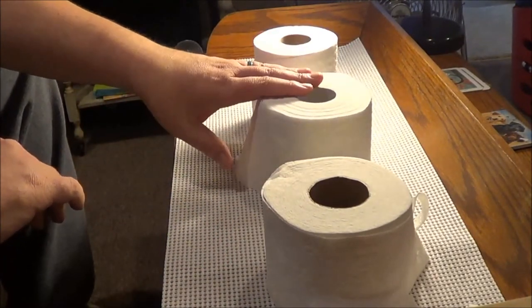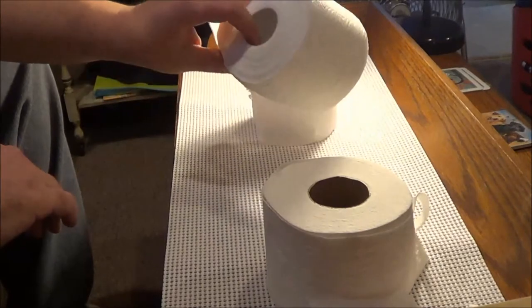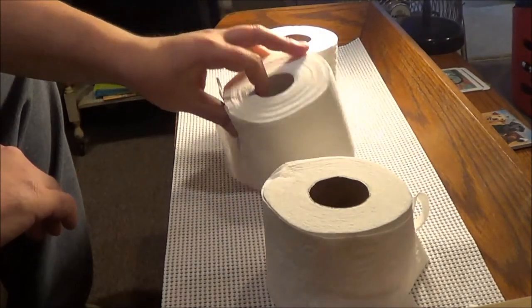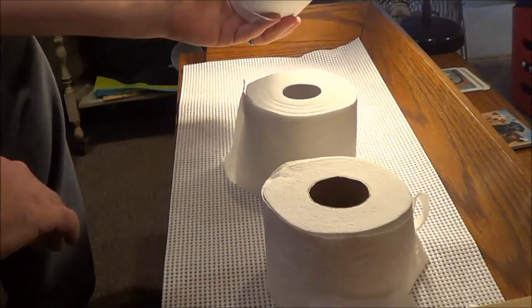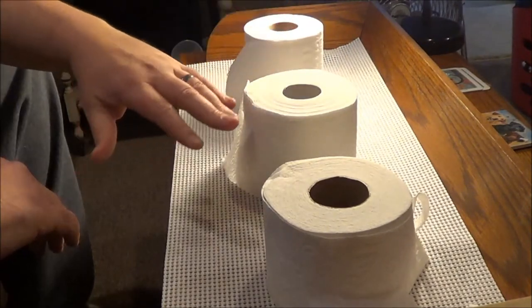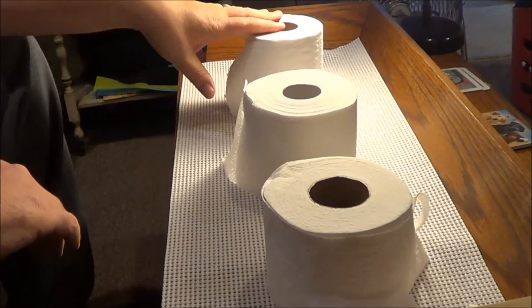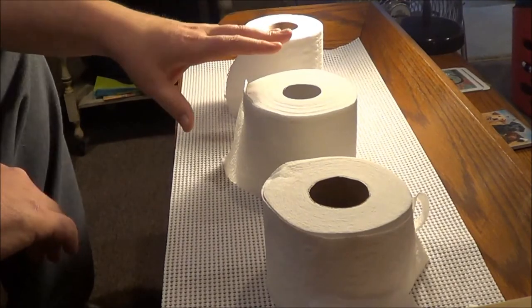The Scott tissue is definitely the biggest double roll out of all of them, so I think you get the most sheets out of Scott's tissue. And then, of course, the Boardwalk. Overall, I'm happy with all these products, but if I'm going to pay a little bit less for this one, I understand I'm going to get a little bit less as well.